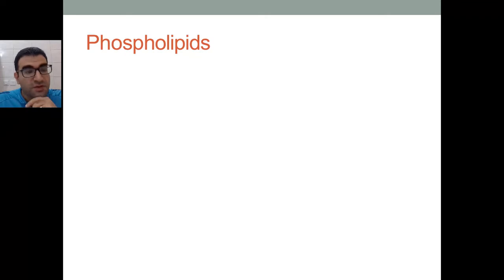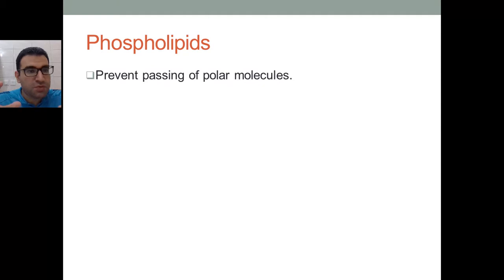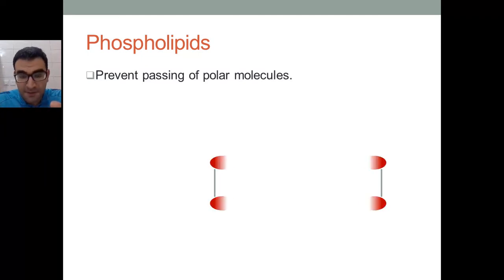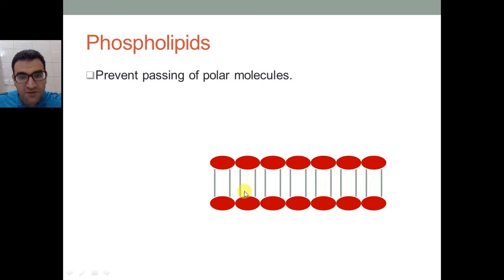Let's start with the phospholipids. What are phospholipids? The phospholipids are the major components that constitute the phospholipid bilayer of the cell membrane. As you can see, this is one phospholipid, and this is another phospholipid attached below it.